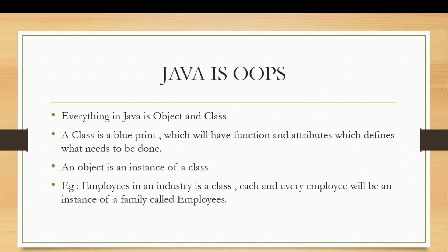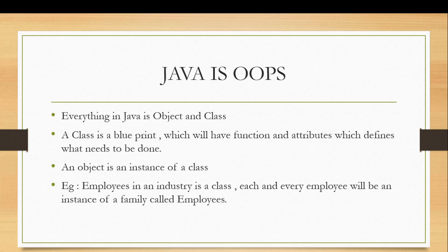So a class is nothing but a building block in code. What is an object? An object is nothing but an instance of a class. For example, if you have an employee union, there would be many number of employees — those employees are instances of the employee union. You can clone the entire class into a single instance; that is called an object in Java.